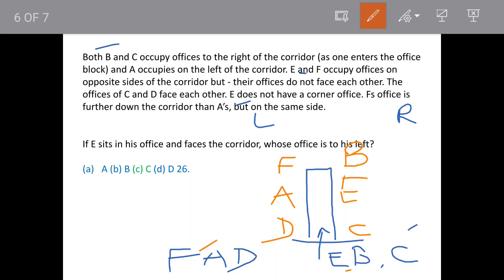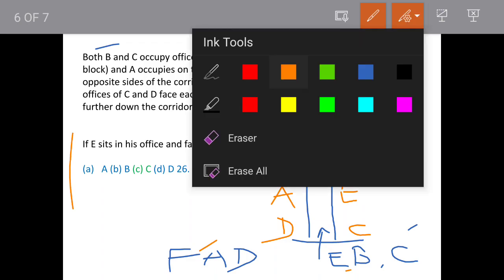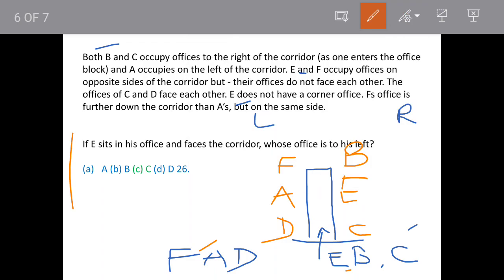If E sits in his office and facing the corridor, so if E is sitting here and facing this way, now who is on his left side? On his left side is C. So our answer is option C. Hope we are clear.